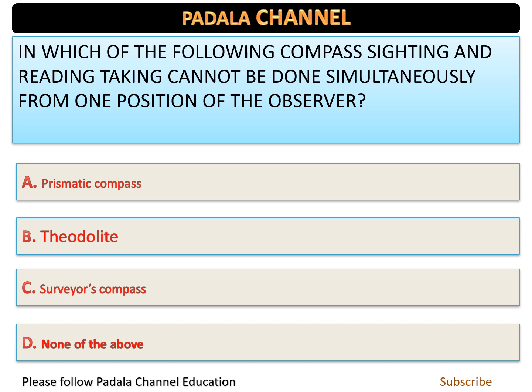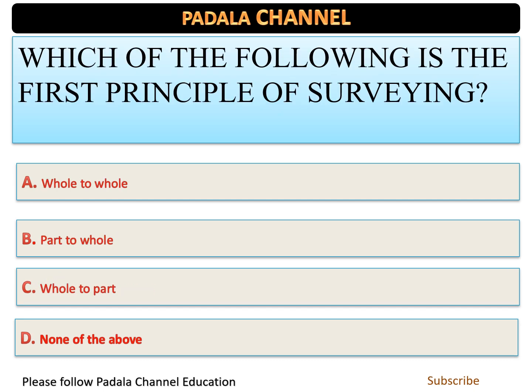Next question: in which of the following compass can sighting and reading not be done simultaneously from one position of the observer? The correct answer is option C — the surveyor's compass.